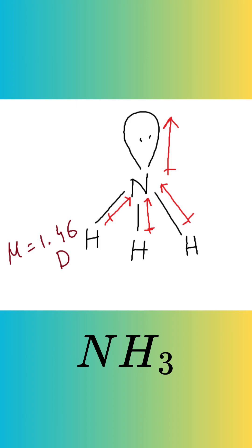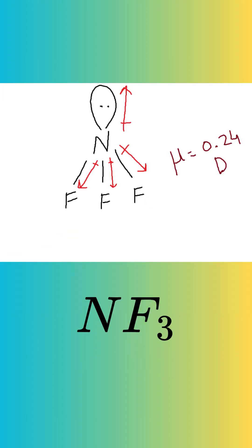Since both the bond dipoles and the lone pair dipole point in the same general direction, they add up, resulting in a relatively large net dipole moment. In NF3, fluorine is more electronegative than nitrogen.